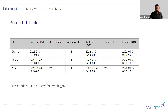A PIT table has one record per snapshot date per business key. In this case, the customer hash key has three different records — for January 1st, 2nd, and 3rd — which are the snapshot dates. The PIT table holds references to all attached satellites, so here we have two satellites: the address satellite and the phone satellite.